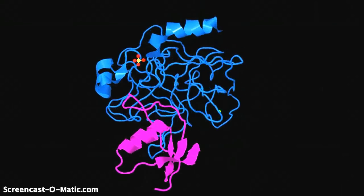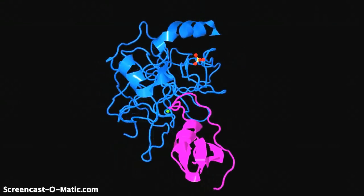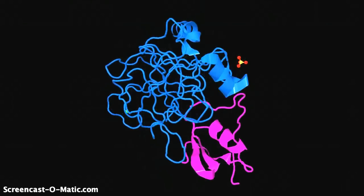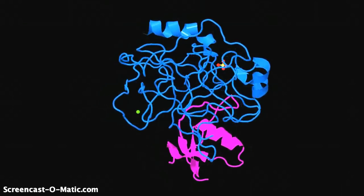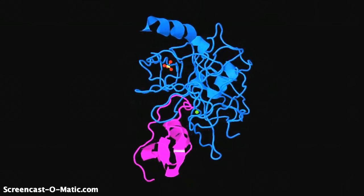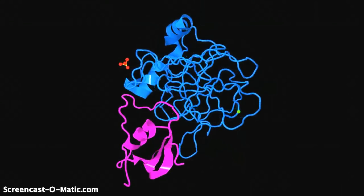In the duodenum, as trypsinogen comprised of 229 amino acids activates to become trypsin, which only has 223, it loses six of its amino acids and switches together into a single chain.